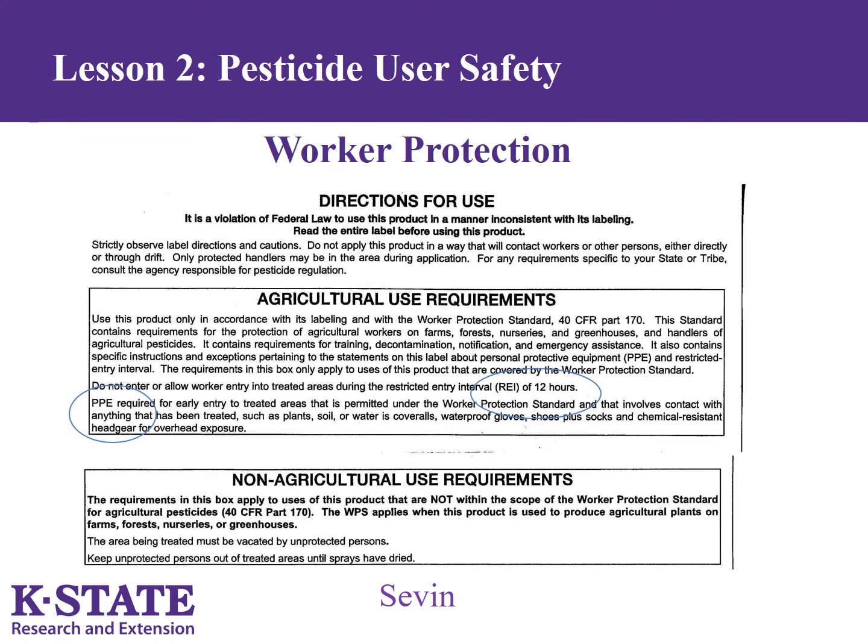Some homeowner product labels may have an agricultural use requirement section, which lists requirements for the worker protection standard. It is important to note that many products exhibit a restricted entry interval where workers should not enter treated areas until after the time period has lapsed. This label indicates to keep unprotected persons out of the treated area until the spray has dried.